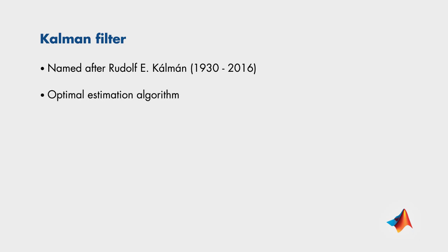Let's look at some facts about Kalman filters. The Kalman filter is named after Rudolf Kalman, who is the primary developer of its theory. It is an optimal estimation algorithm that predicts a parameter of interest such as location, speed, and direction in the presence of noisy measurements.